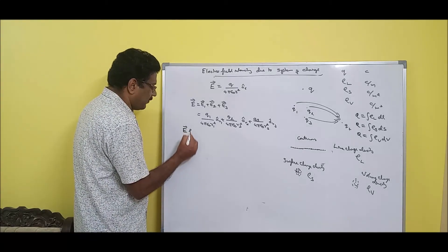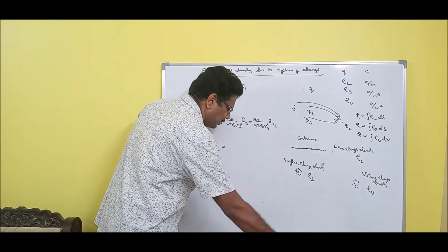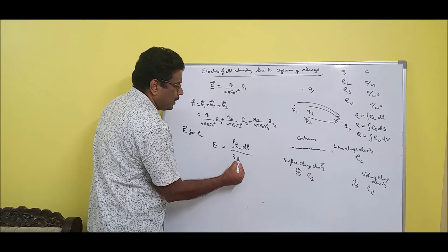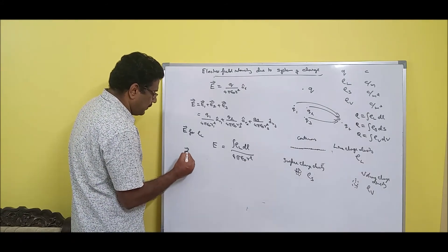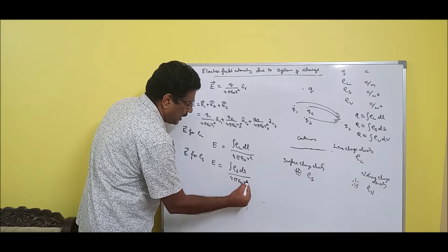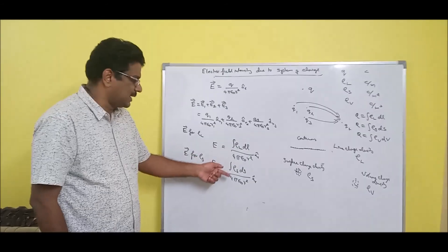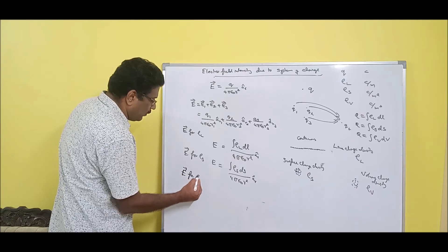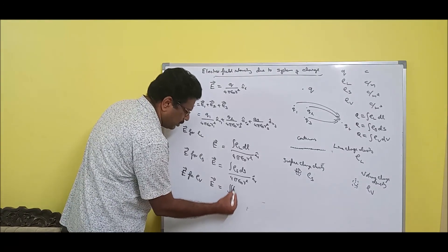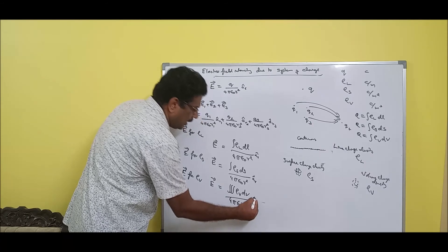Now, what is the electric field intensity E for these distributions? For line charge: E equals the integral of rho-L·dL divided by 4·pi·epsilon·r-squared, times a-r-cap. For surface charge: E equals the integral of rho-S·dS divided by 4·pi·epsilon·r-squared, times a-r-cap. For volume charge: E equals the triple integral of rho-V·dV divided by 4·pi·epsilon·r-squared, times a-r-cap. All are vectors.